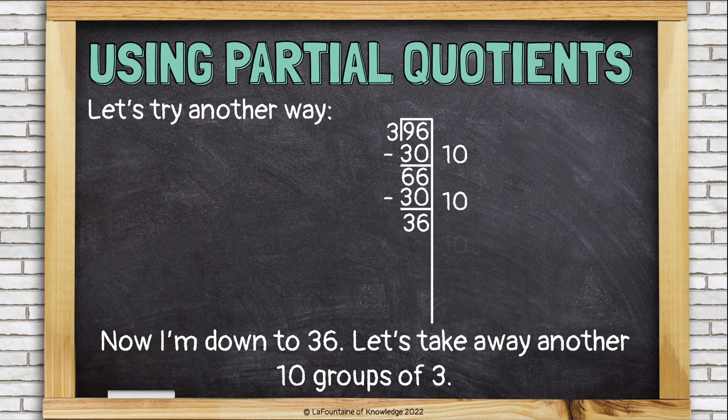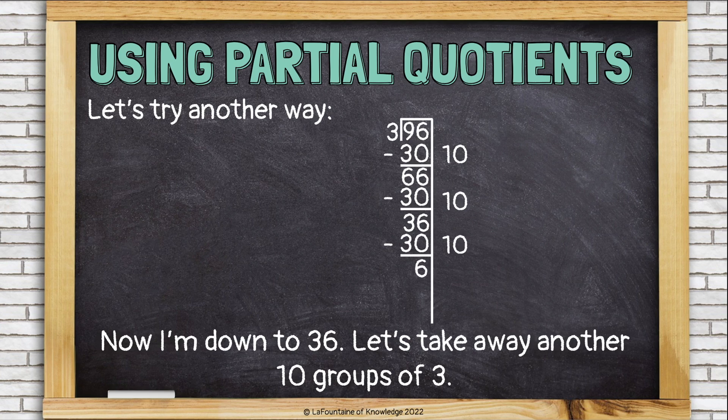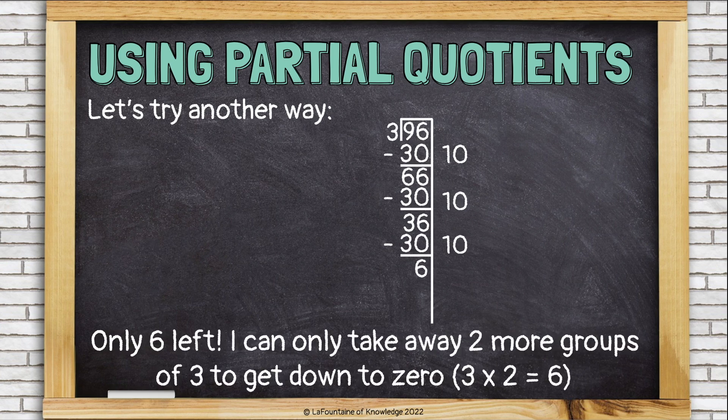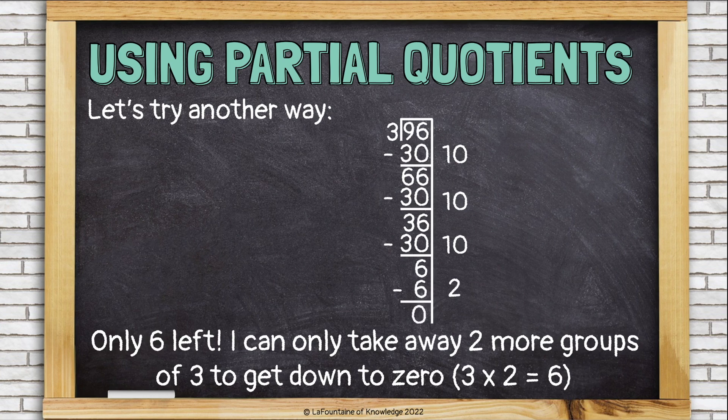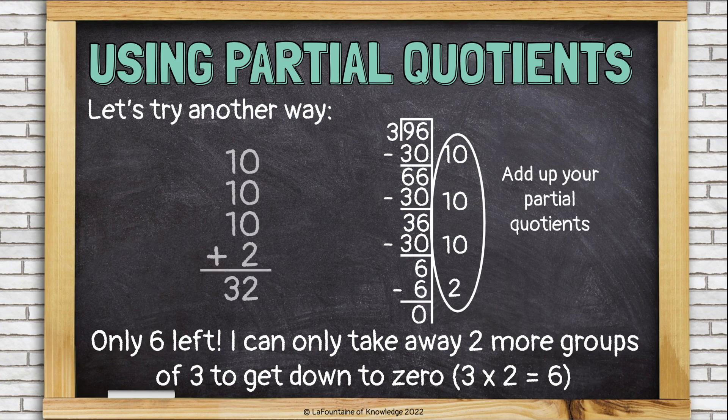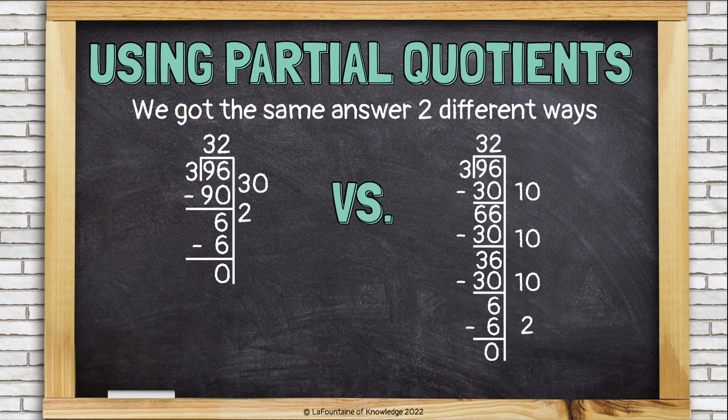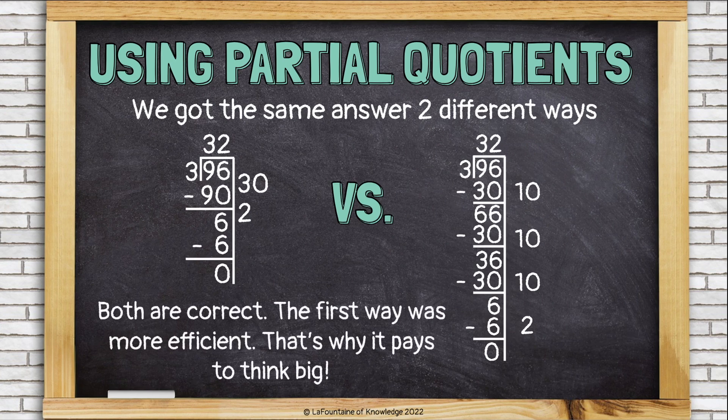I can do that again. Let's take away another 10 groups of 3, or another 30, and now I only have 6 left. I can take away 2 more groups of 3, because 3 times 2 is 6, and that gets me down to 0, which means I am done. Add up your partial quotients. 10 plus 10 plus 10 plus 2 is 32. So we got the same answer two different ways. Both are correct.